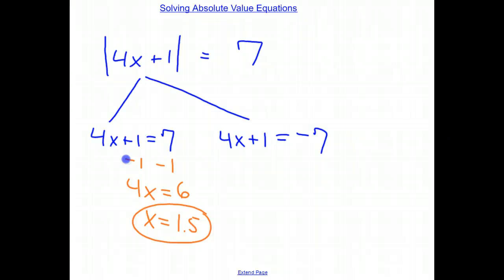Let's take a look at the other problem over here. I have 4x plus 1 equals a negative 7. Well, how do I solve this? Exactly the same way as we solve the other one. I'm going to subtract 1 from both sides. I get 4x equals negative 8. Divide by 4. We get x equals negative 2.